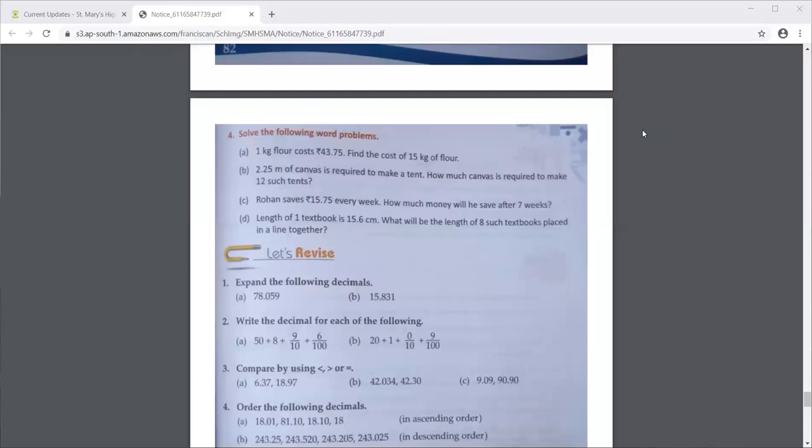Now regarding statements, 2.25 meters, what is it? It is the canvas required to make a tent. So that can be your first statement. Canvas required to make a tent equals 2.25 meters. Therefore, now the therefore statement, that is also given over there. You simply remove the words how much. Therefore the canvas required to make 12 such tents, that is also given over there.